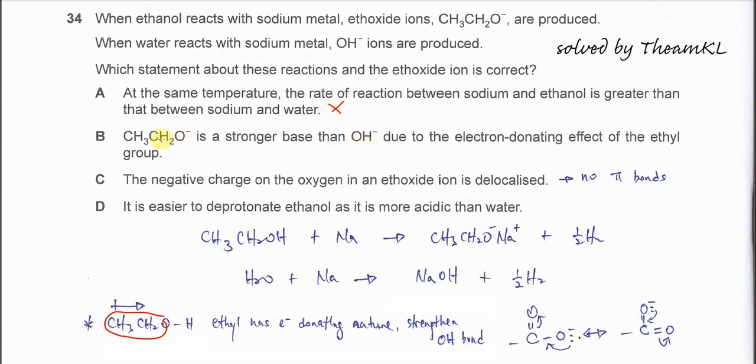Option B: CH3CH2O- is a stronger base than OH- due to the electron-donating effect of the ethyl group. This is true. After it reacts and forms this sodium ethoxide, once the ethoxide forms, we know that this one is the ethyl group.